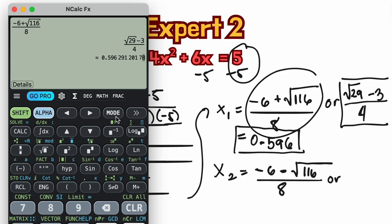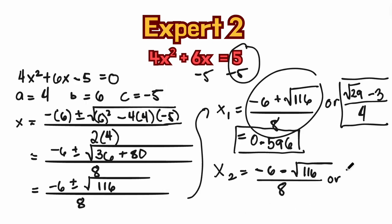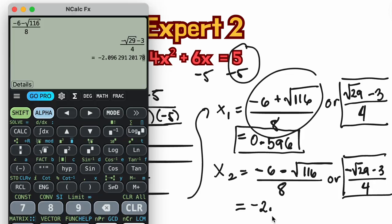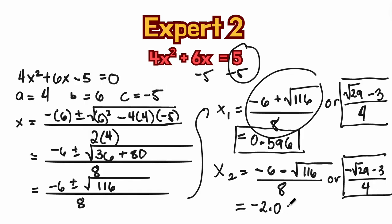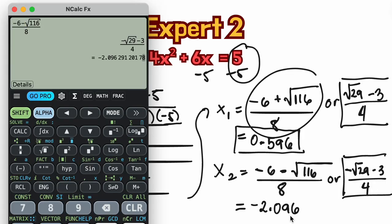Or when we get to change this positive to negative, it became negative square root of 29 minus 3 all over 4. It's one of the form, one of the answer. Or in decimal form, approximately, that is negative 2.096.